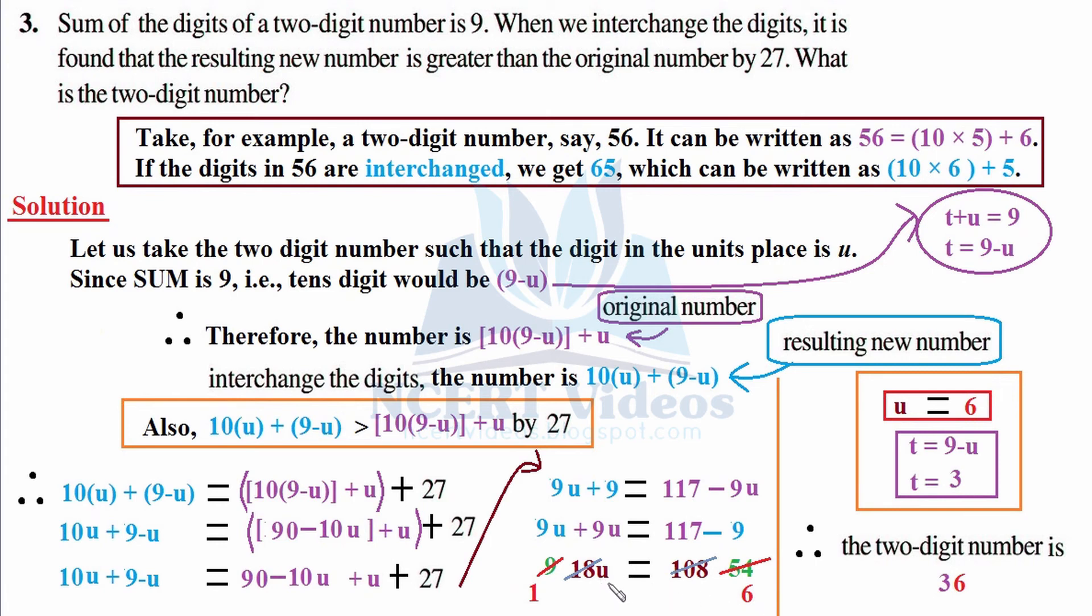u denotes unit place, so u = 6. The question was asking what is the two-digit number. We have found unit place as 6. The relationship was t = 9 - u, so t = 9 - 6 = 3. Therefore the required two-digit number is 36.